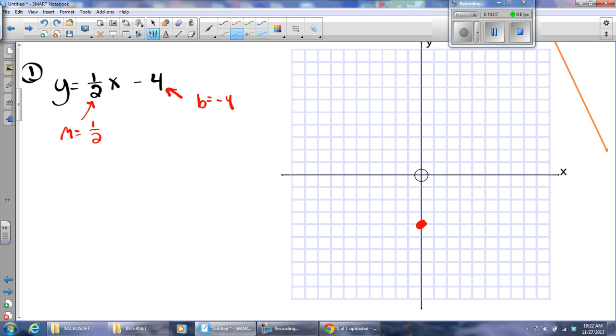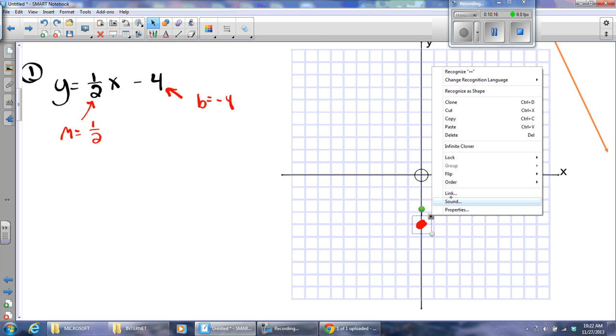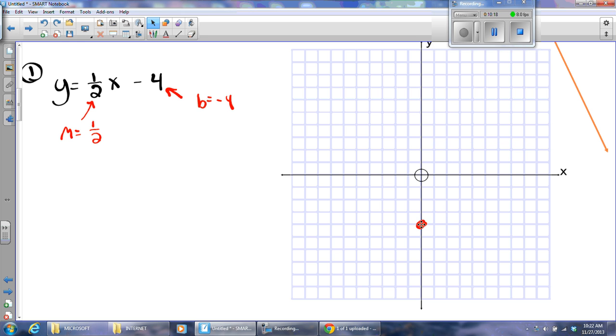Now, I use my slope of one over two, which means I rise one, run two. So, we are going to rise one, run one, two. From that next point, I can rise one, run two. And there I have a pretty line. I'm going to go ahead and draw that line.